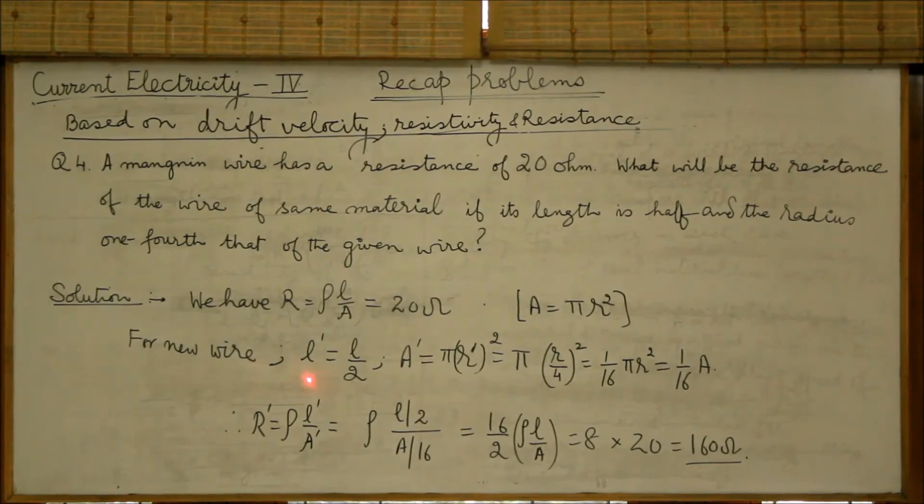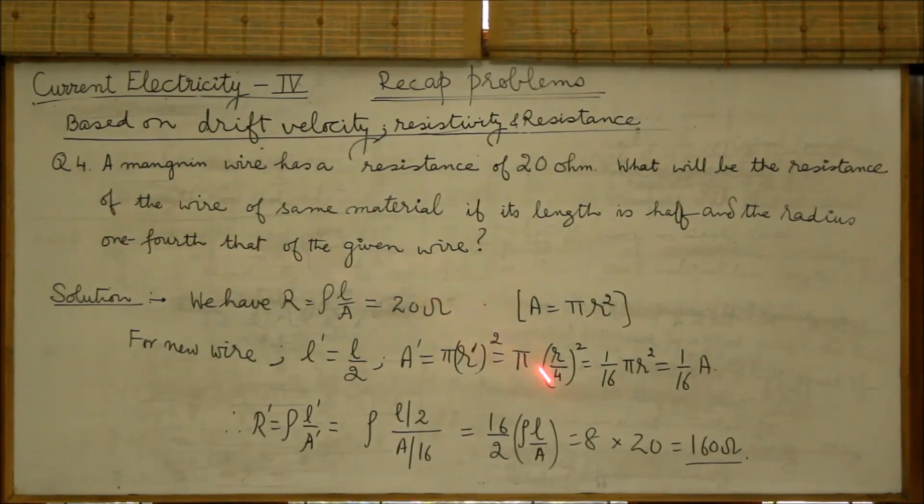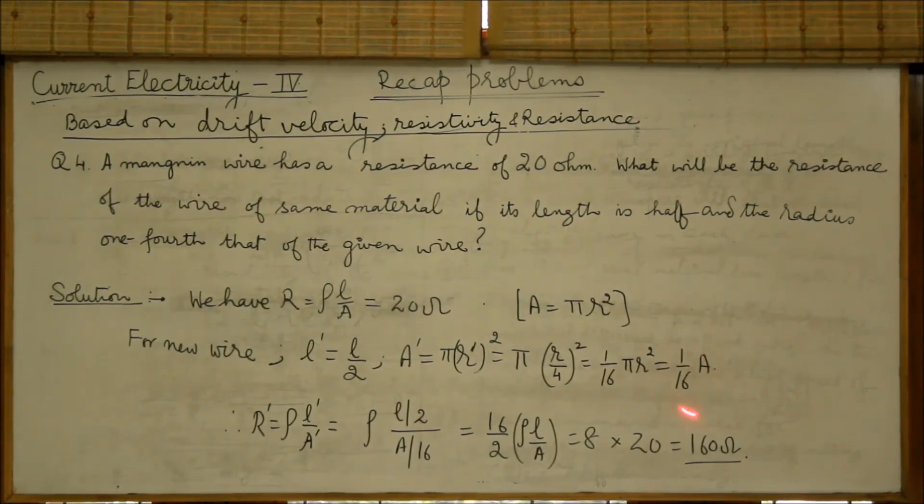For the new wire, we have length L dash equal to L by 2. Area A dash is pi R square equal to pi R by 4 because the radius is reduced to one-fourth. So, A dash comes out to be 1 by 16 pi R square, or 1 by 16 A.